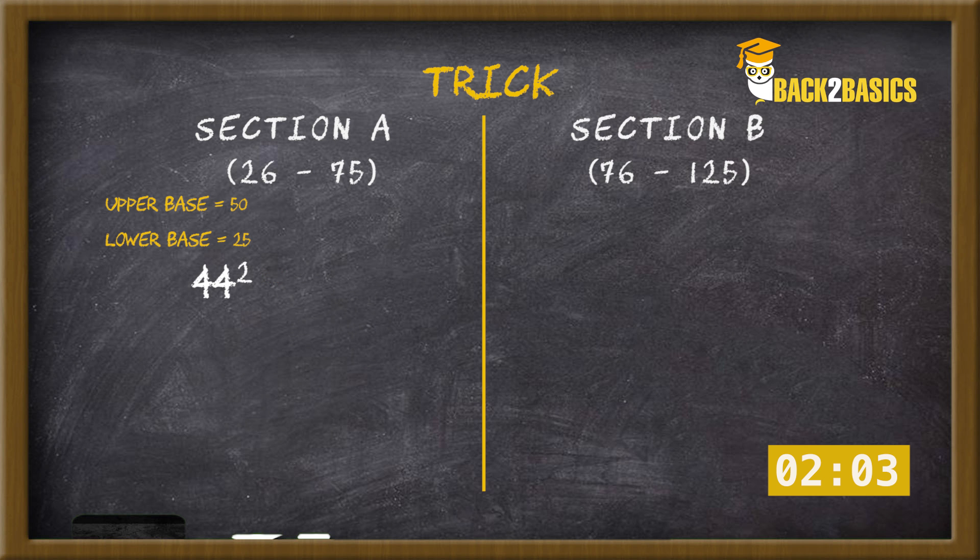Similarly, 44 square can be solved as lower base 25. 44 compared with 50 gives us minus 6. So 25 minus 6 equals 19. And our next two digits will be square of 6 that is 36. So 44 square equals 1936.